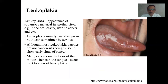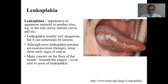Leukoplakia is the appearance of squamous material in another site — for example, in the oral cavity or uterine cervix, where the occurring epithelium is squamous non-keratinized. Leukoplakia is usually not dangerous but can sometimes be serious. Although most leukoplakia patches are non-cancerous and benign, some show early signs of cancer. Many cancers on the floor of the mouth beneath the tongue occur next to areas of leukoplakia. In this illustration you see areas of leukoplakia of the tongue.